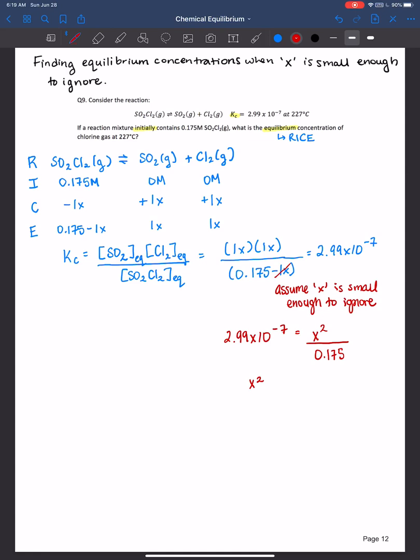If we solve for x squared, we multiply both sides by 0.175. And then if we take the square root to solve for x, x is equal to 2.2874 times 10 to the negative fourth.